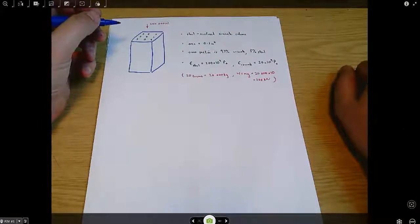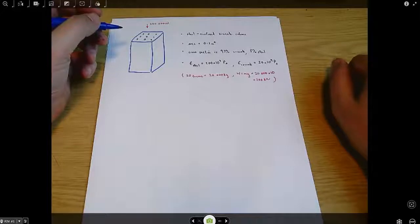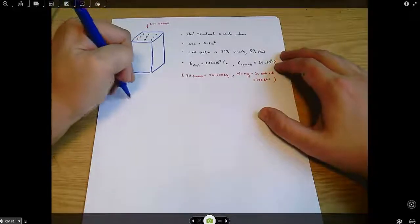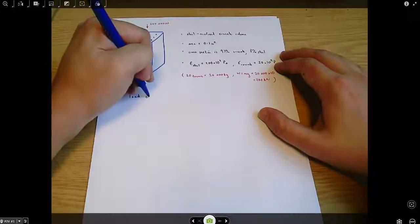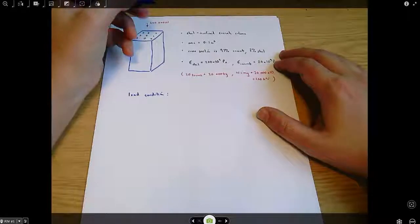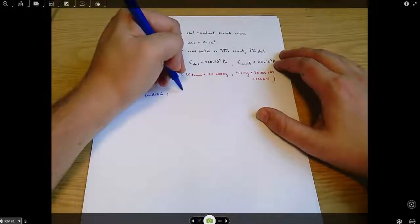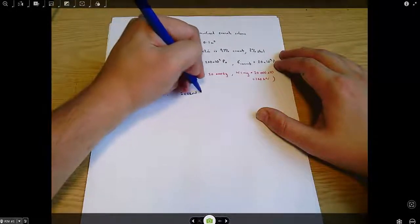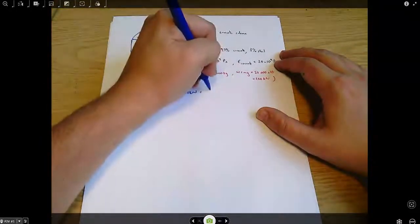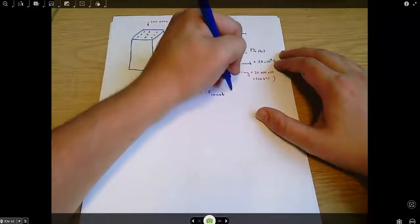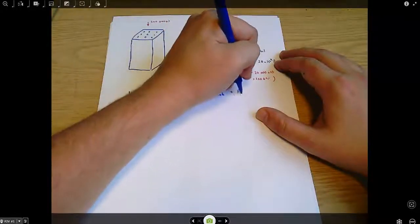There are two things that we need to do in these cases. The first is, I'll call it the load condition. We want to say that the force supported in total, so 200 kilonewtons, is somehow balanced by a force in the concrete plus a force in the steel.